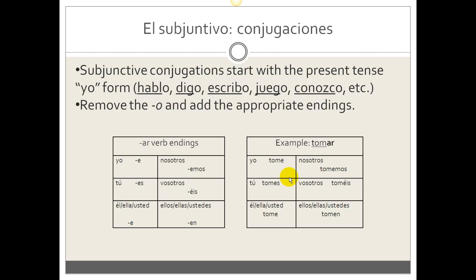So we conjugate the verb in the yo form. For example, hablo, digo, escribo, juego, conozco, etc. Remove the O, and add the appropriate endings. So these stems that are underlined is what you get left with: H-A-B-L, D-I-G, E-S-C-R-I-B, etc. Those become the stems that then you add the conjugations to, or add the endings.